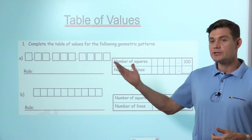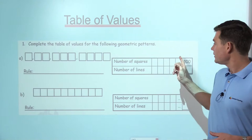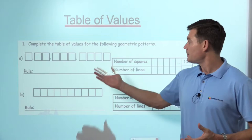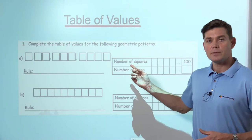The question is going to ask you to complete the table of values based on the geometric patterns given. So this here is our geometric pattern, this here is our table of values. It's going to give us some specific information based on this pattern.